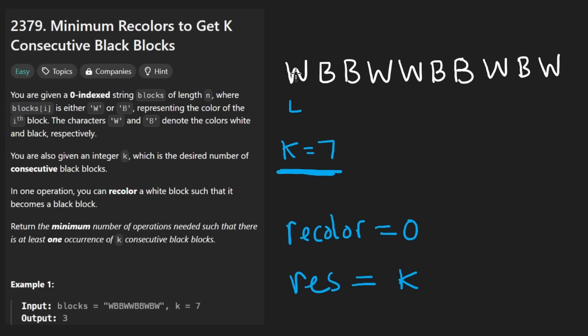It's never going to be greater than k, assuming that k is less than or equal to the input, which I think is guaranteed based on the constraints of the problem. So let's initialize that to this. My right pointer is going to be going. I see W, I can increment recolor to one. Then I go over here, it's a black. I'm going to go again, it's black. Then I'm going to go here, it's white, so we increment recolor to two.